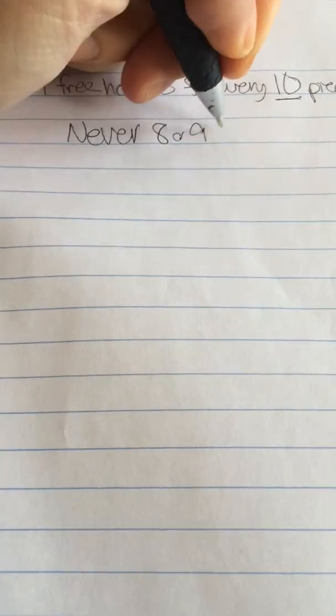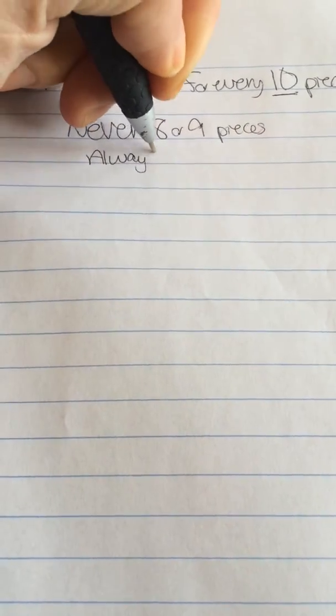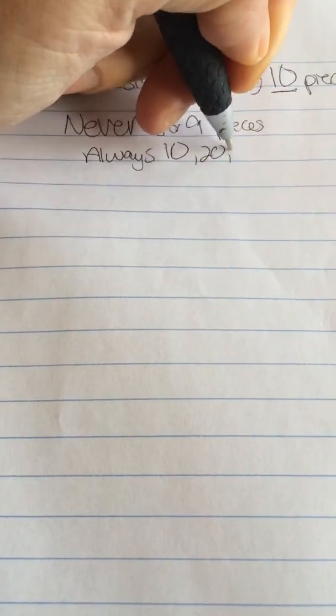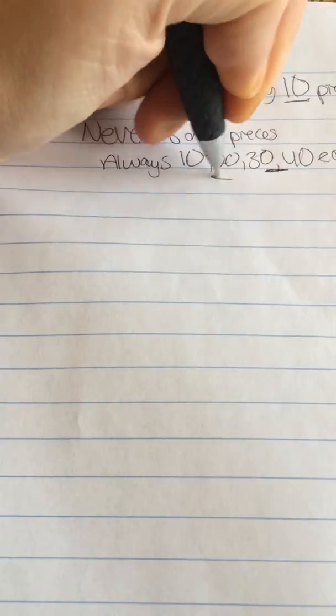The first thing is that we get one free hostess reward for every ten pieces we buy. So if you're going to place an order, even if it is a small order, never order eight or nine or seven pieces. Always order 10 or 20 or 30 or 40, etc., because that is how you're going to maximize your freebies.